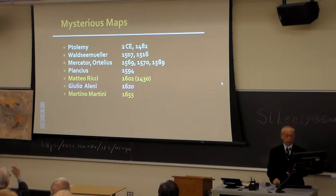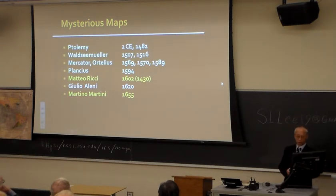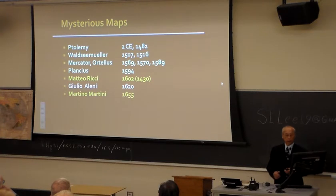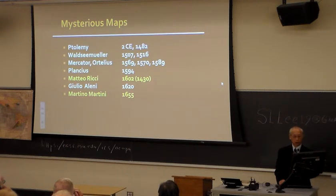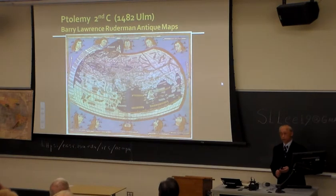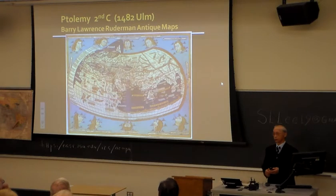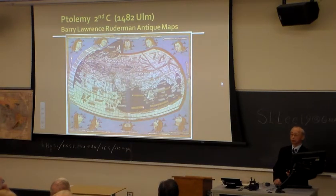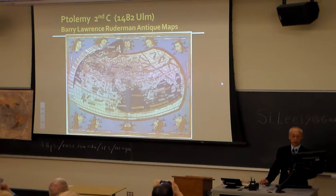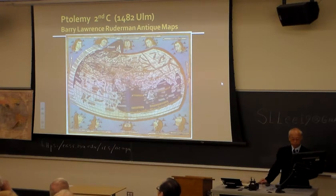The maps I'm going to be talking about mostly are the one by Matteo Ricci in 1602 and the one by Martino Martini in 1655. Without including other background maps you wouldn't understand what I'm talking about, so I have to include those. First, a map by Ptolemy, considered the father of modern geography. This is not actually a map done by Ptolemy, who was a Greek in the second century — he only had a book with coordinates. In 1482, people drew the map based on those coordinates and came up with what people just called the Ptolemy map.